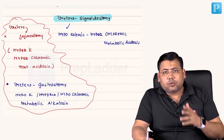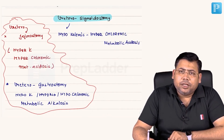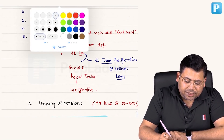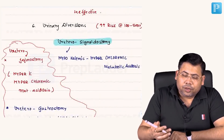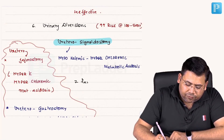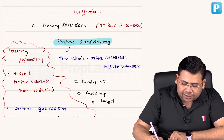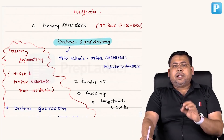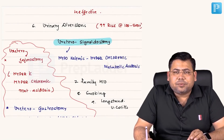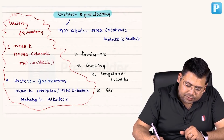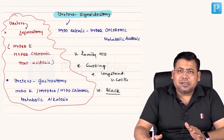Ureterosigmoidostomy is associated with a greatly increased risk of adenocarcinoma. Summarizing the risk factors: age, radiation, HNPCC, FAP, diet, urinary diversion, family history, smoking, long-standing ulcerative colitis — which carries a 20% increased risk when present for at least 7 years — and race, particularly black race.